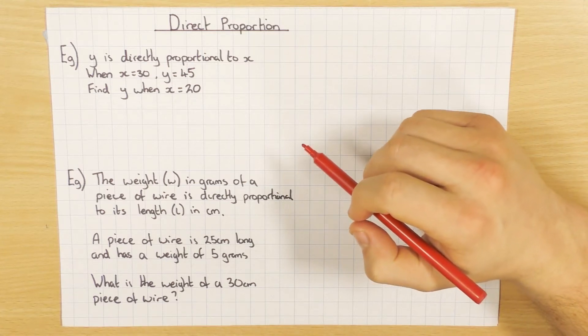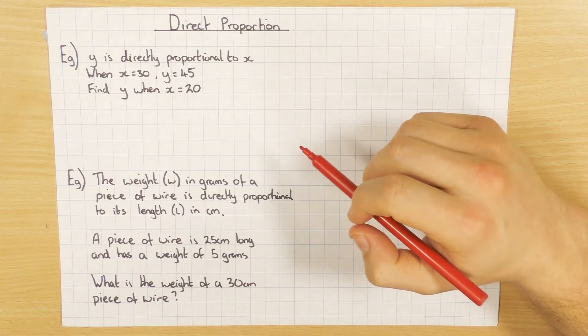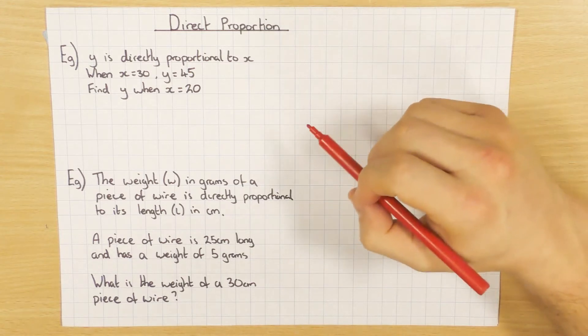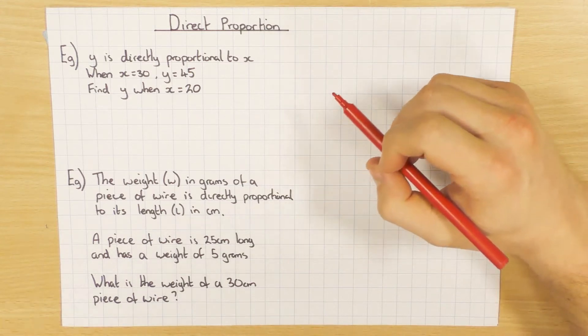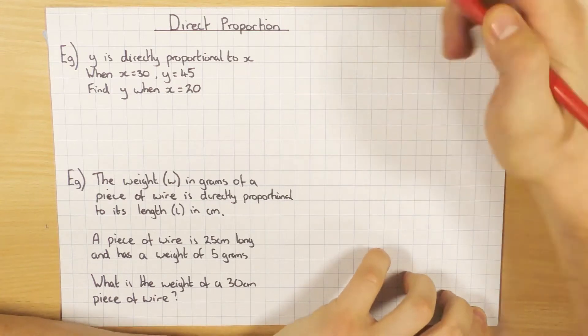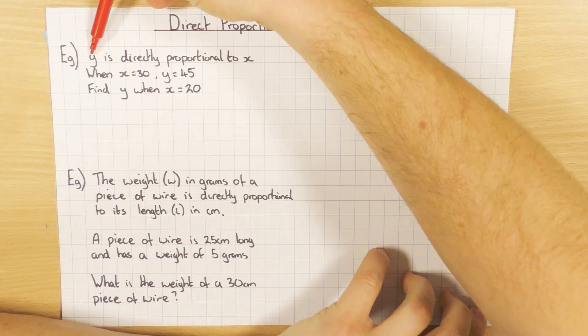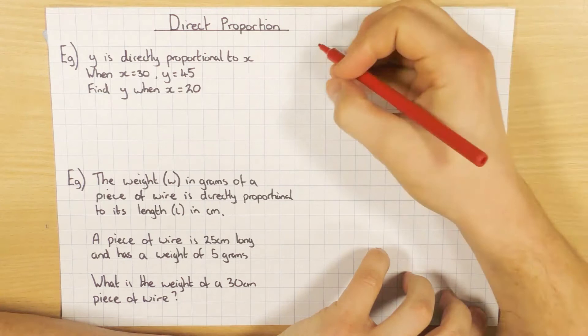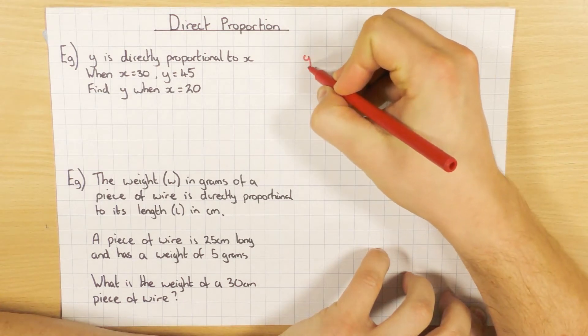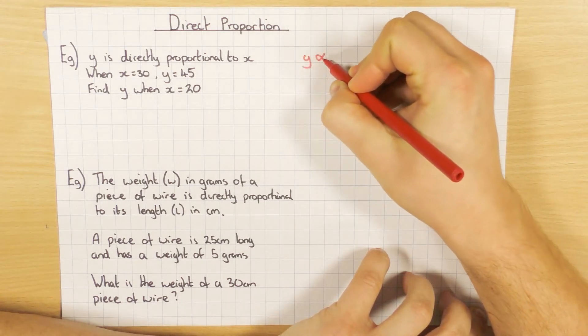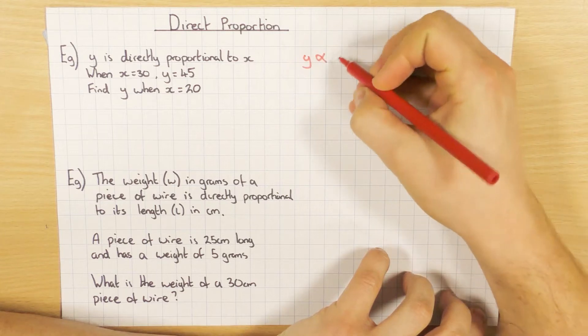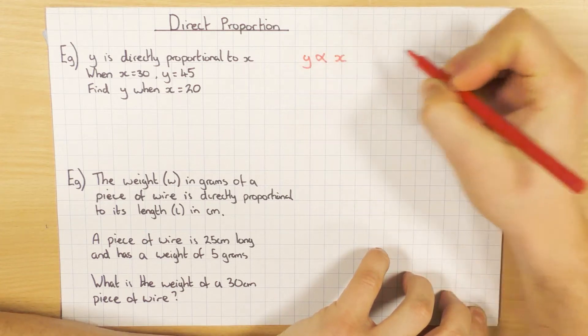Now what we need to find out is by how much does that increase? What's the relationship between the two? So to do that, we set it up in this way. These questions are really quite nice because actually it just tells you exactly what you need to do. It says y is directly proportional to x, so this is how you write it. So y, and then we use this symbol here, which means proportional to x.